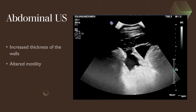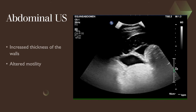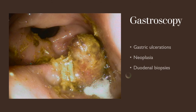On abdominal ultrasound we may find increased thickness of the walls of the small intestine or altered motility. With gastroscopy — and in the picture here you can see the pylorus with an ulcerated nodular lesion — we can check for gastric ulceration and presence of neoplasias. Through the gastroscope we can also perform a duodenal biopsy, taking a sample from the first portion of the small intestine in a less invasive way compared with a surgical approach.